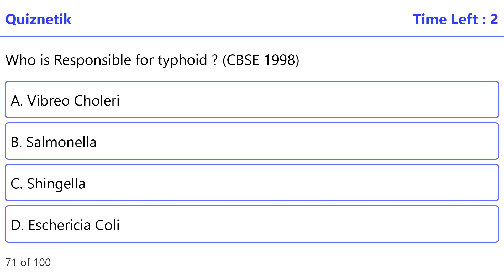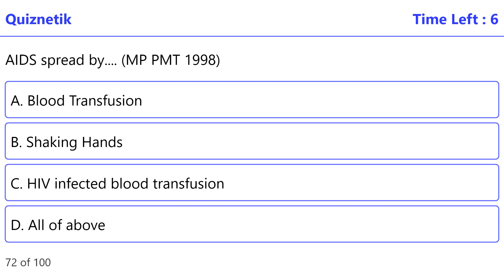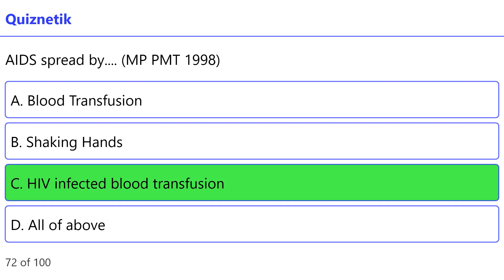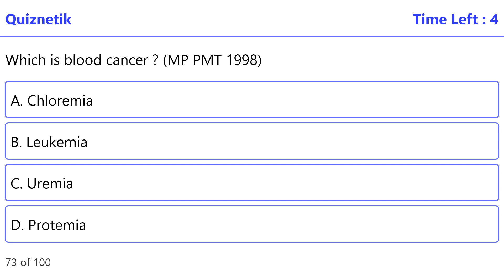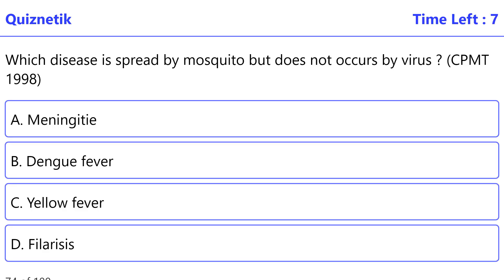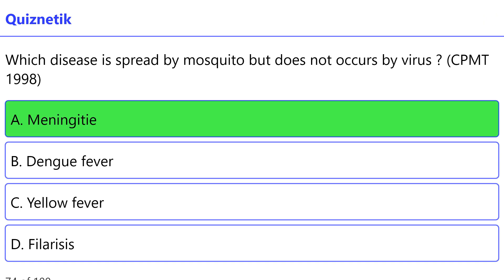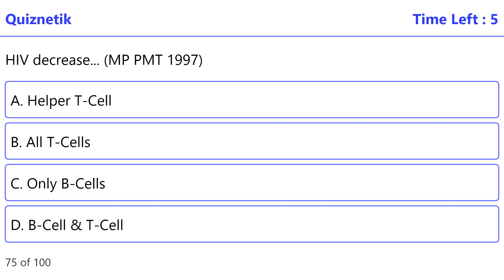Who is responsible for typhoid? The correct option is B — Salmonella. AIDS spreads by — MPPMT 1998 — the correct option is C — HIV infected blood transfusion. Which is blood cancer? MPPMT 1998 — the correct option is B — Leukemia. Which disease is spread by mosquito but does not occur by virus? CPMT 1998 — the correct option is A — Meningitis.